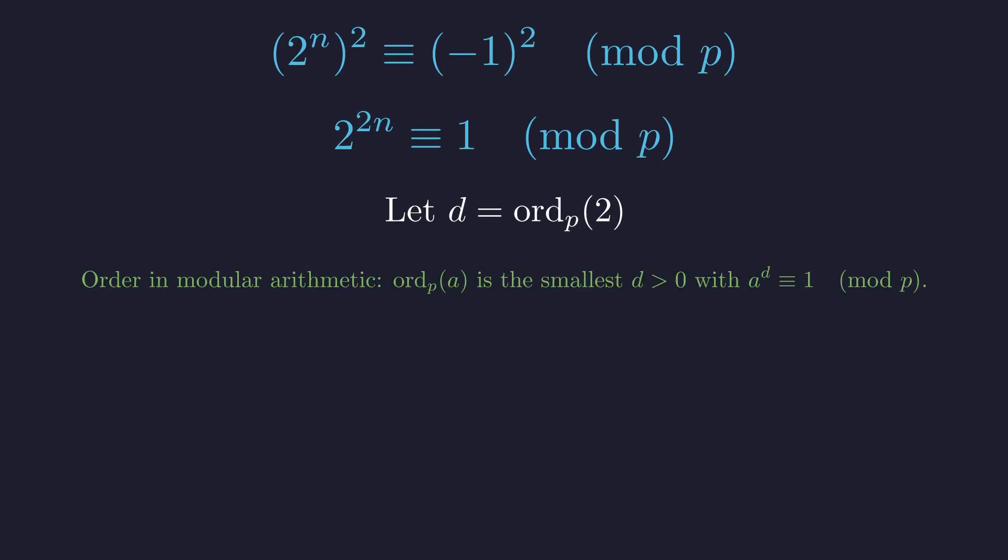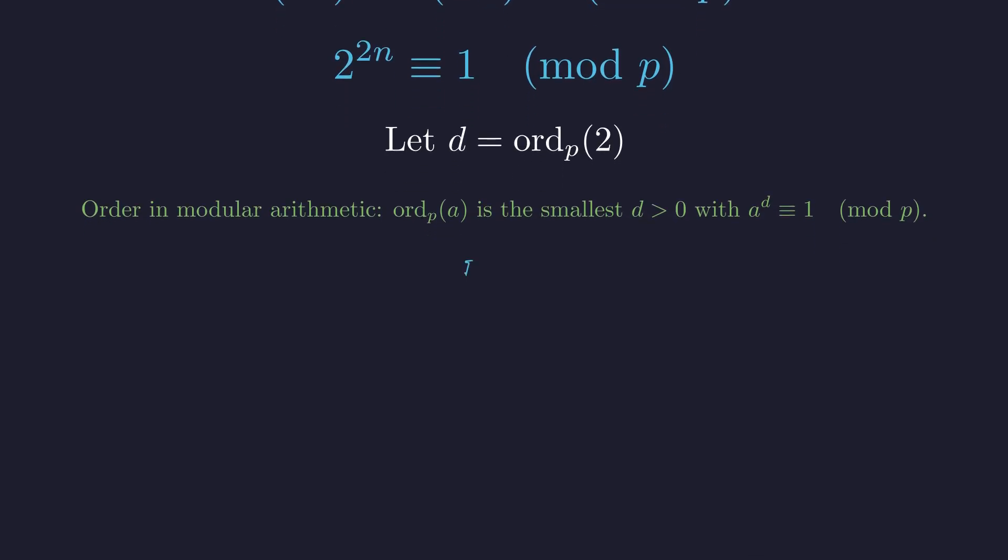The order of a number a modulo p is the smallest positive integer d such that a to the d is congruent to 1 modulo p. For example, the order of 2 modulo 7 is 3, since 2 cubed is 8, which is 1 mod 7. From our previous step, the order d must divide 2n. However, since 2 to the n is congruent to negative 1 and not 1, d cannot divide n.